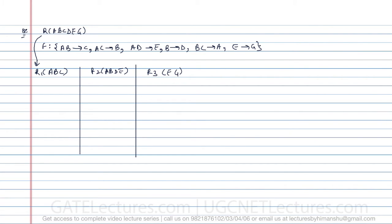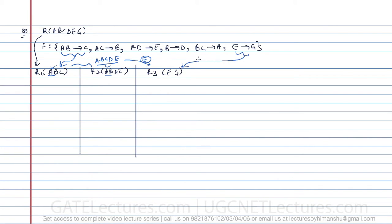First let us check whether the following decomposition is lossless or not. In R1 and R2, AB is a common attribute, and AB is a key attribute in R1. After combining these two, we get attributes A, B, C, D, E. Between this combined relation and R3, E is a common attribute. From the functional dependency E determines G, E is a key attribute in R3.